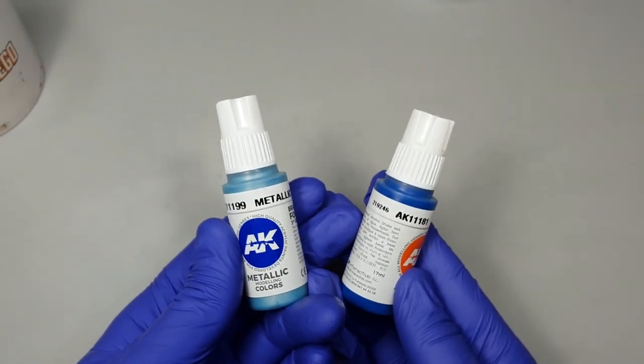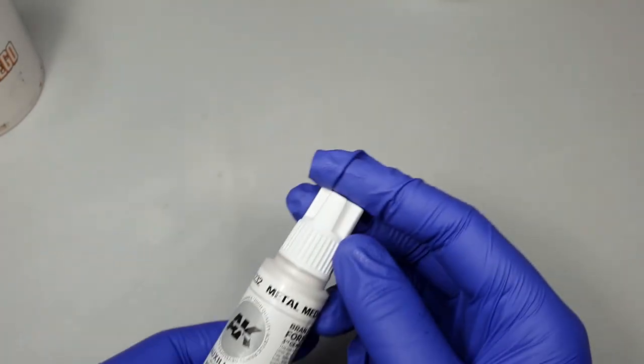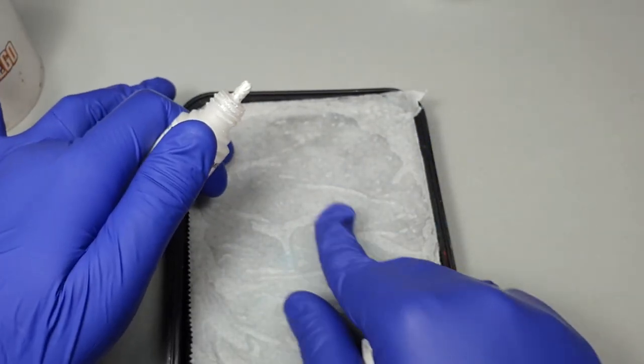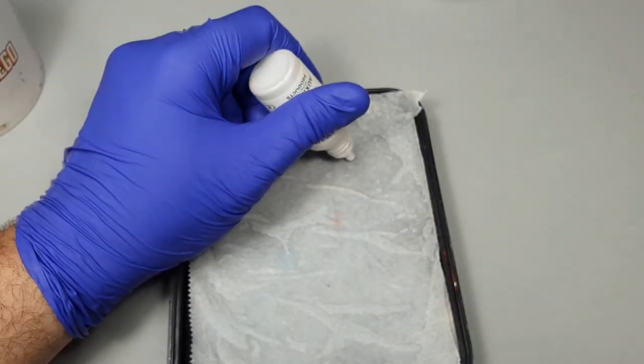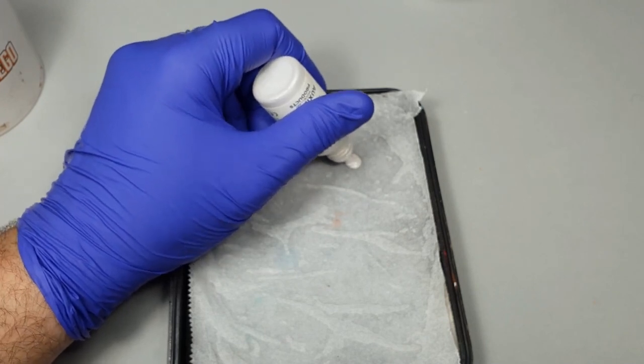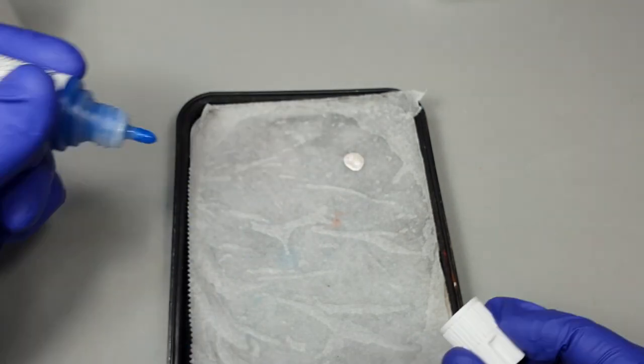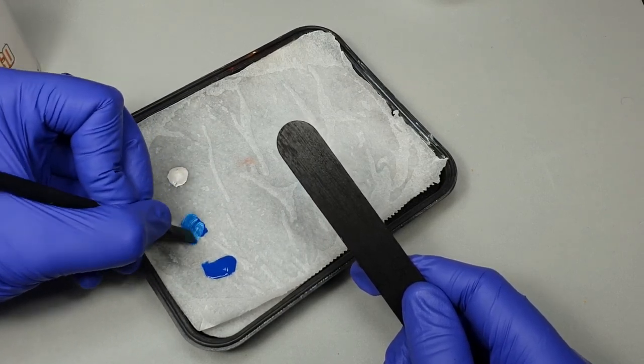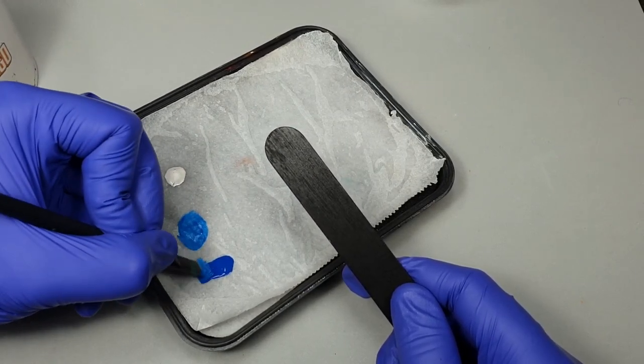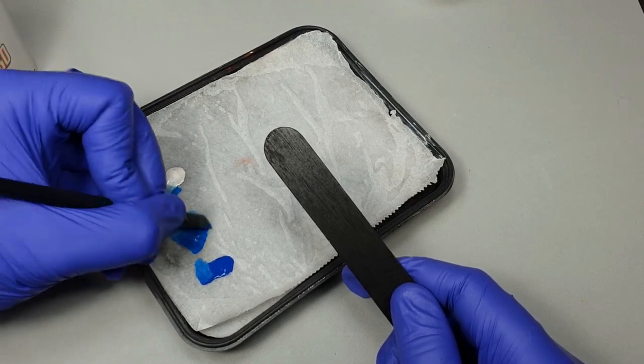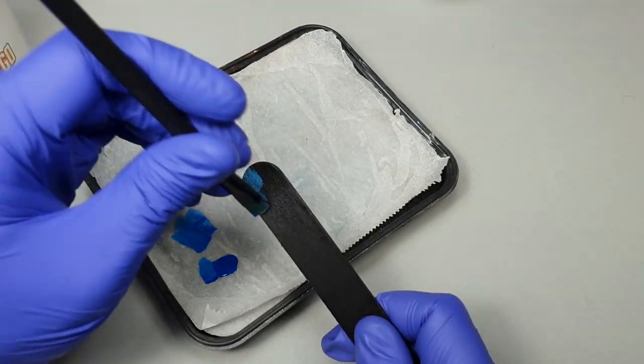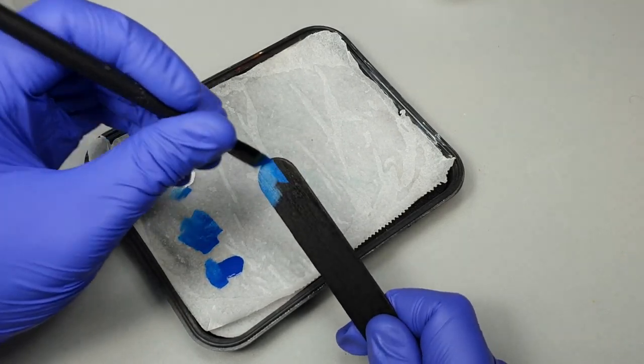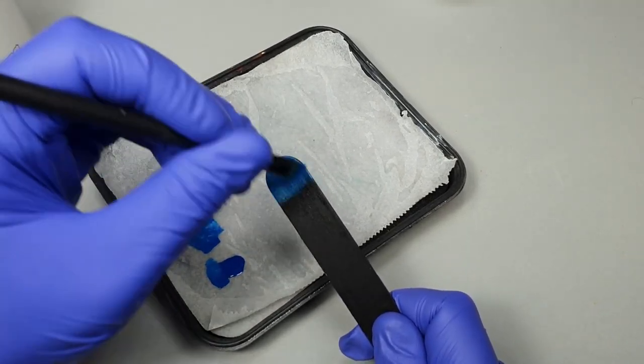To do this, we just need the metal medium and of course the paint of your choice. In our case, it's the dark blue. We'll use the wet palette and place a couple of drops of the metal medium on one side and the dark blue on the other. We'll start mixing them together, adding more of the paint or the medium depending on the tone we are trying to obtain.